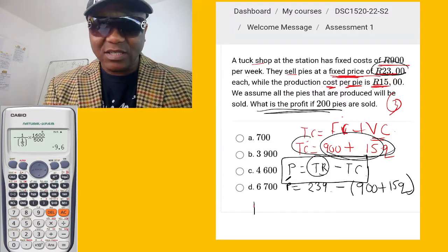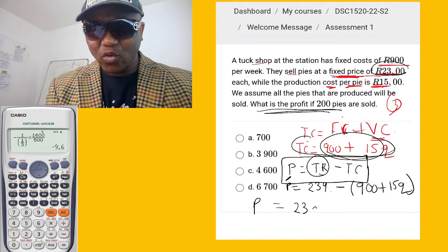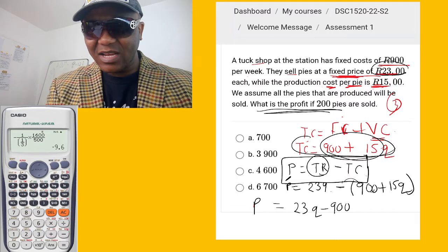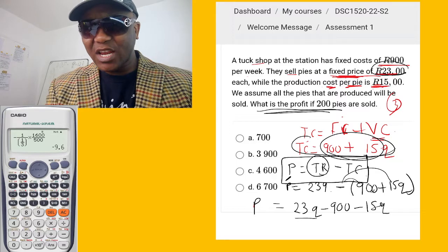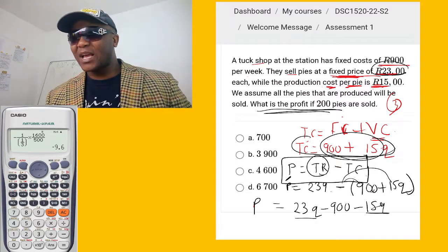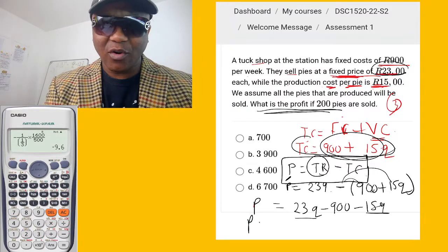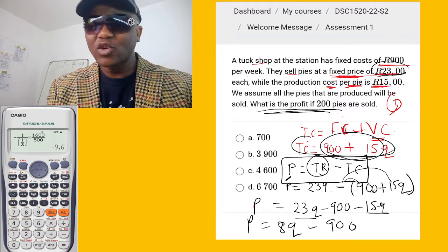So profit equals 23Q. I can open this bracket. Negative times 900 is going to be negative 900. Negative times positive is going to be negative 15Q. Now 23Q minus 15Q, negative 23Q minus 15Q, that's going to give us 8Q. So profit equals 8Q minus 900. This is the profit function.